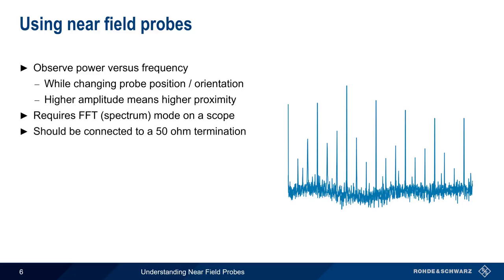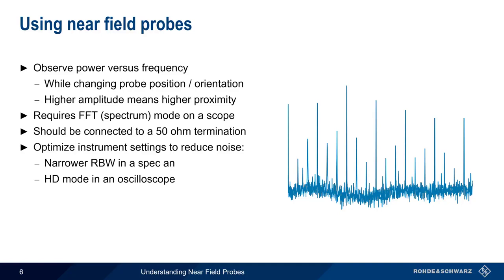Because the received signals may not be very strong, instrument settings should be optimized to reduce noise. For spectrum analyzers, a narrower resolution bandwidth is recommended, and using high-resolution or high-definition mode in an oscilloscope can also help to reduce noise. As we'll discuss in just a few moments, it's often a good idea to use different sizes and different types of near field probes.